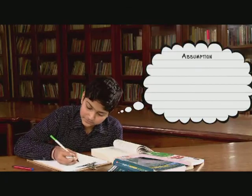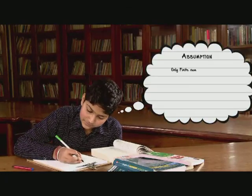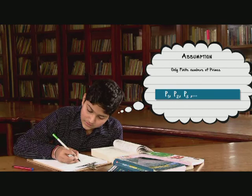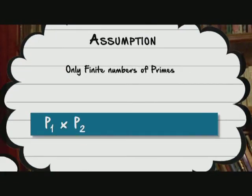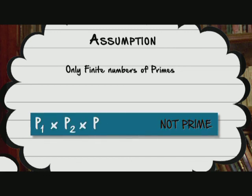What Euclid did was he first assumed that there were only a finite number of primes, p1, p2, p3, all the way up to pn. Now, p1 into p2 is not a prime, since p1 and p2 are factors. Similarly, p1 into p2 into p3 is not a prime. So, p1 into p2 into p3, all the way up to pn is also not a prime.